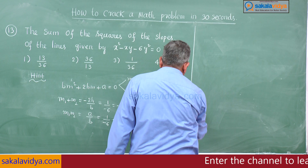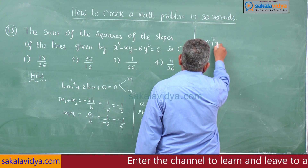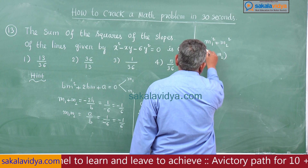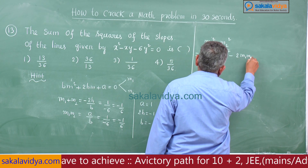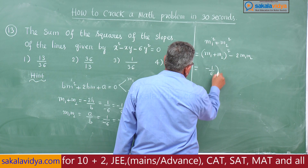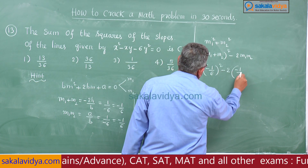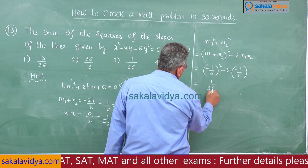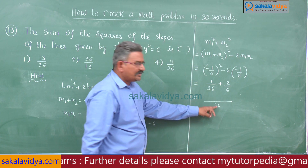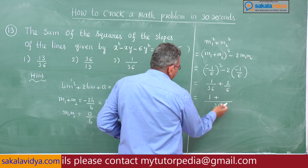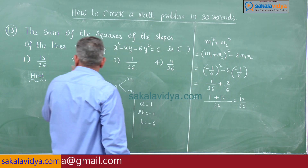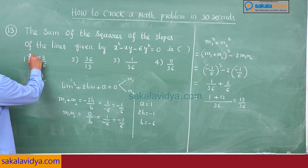Our aim is to find m₁² + m₂², which equals (m₁ + m₂)² - 2m₁m₂ = (-1/6)² - 2×(-1/6) = 1/36 + 2/6. Taking LCM as 36: 1/36 + 12/36 = 13/36. The first option, 13 by 36, is the correct answer.